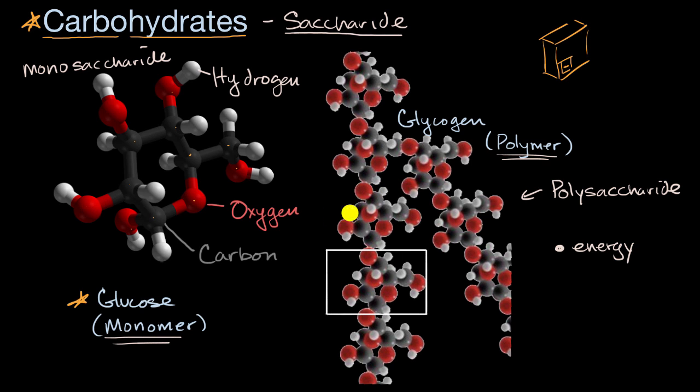Glycogen is also a store of energy in your liver and your muscles. And once again, it can be broken down into the glucose molecules, which is a very readily available source of energy.